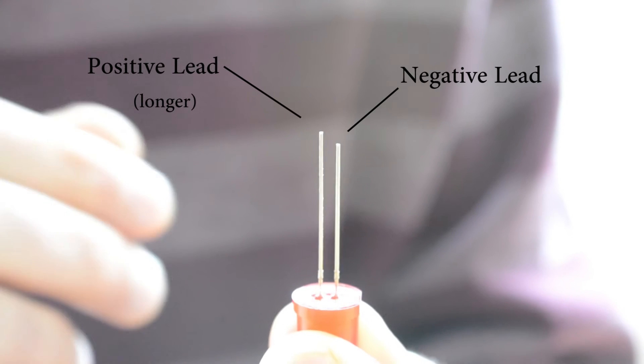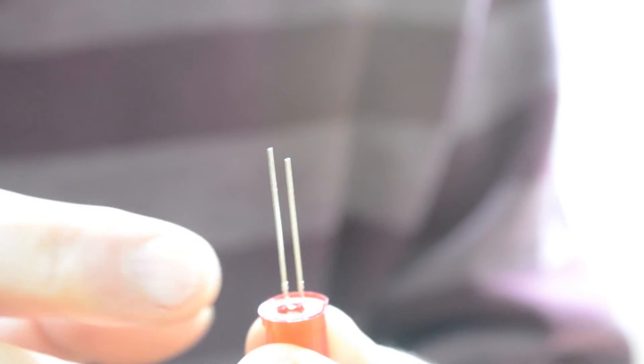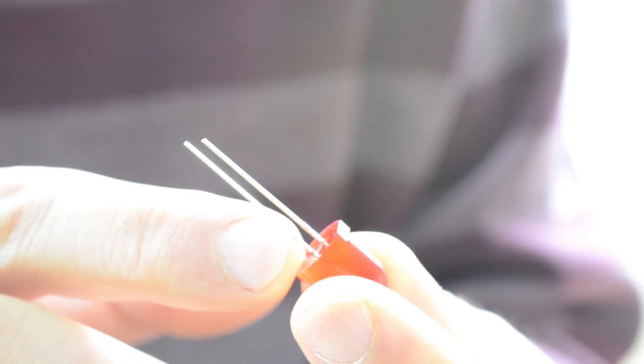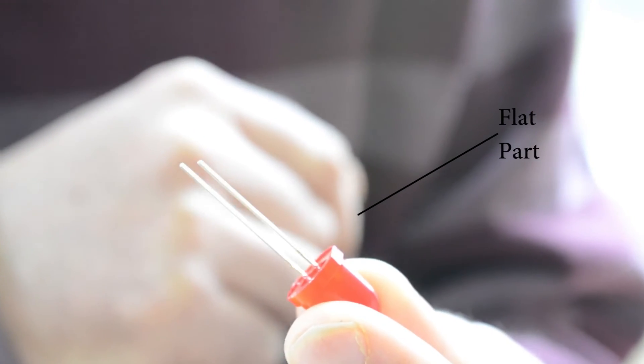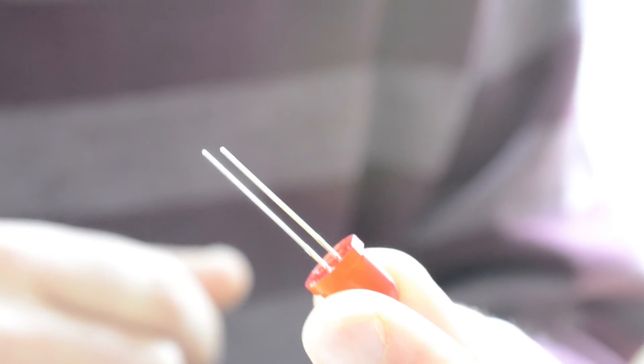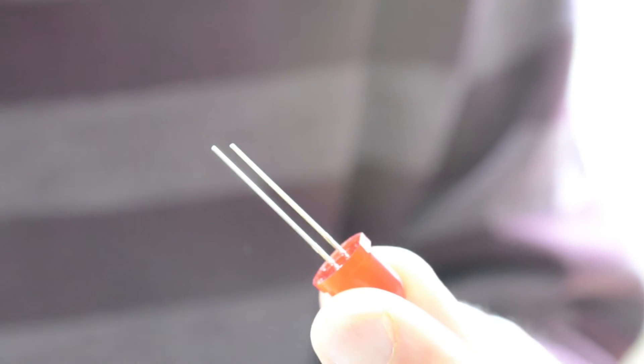Now, if for some reason they are both the same lengths, another thing to check is the actual body of the LED. It'll have one side that's slightly flattened. That's the negative side.